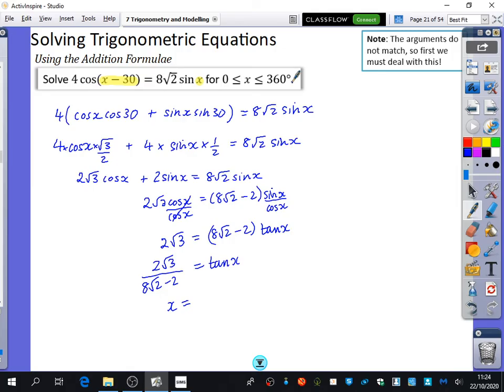What did you get, Saria? 20.4. Good. 20.4. Are there any other solutions? How do you find them? Add 180. It's tan, so you add 180. So your next one is 200.4 degrees.